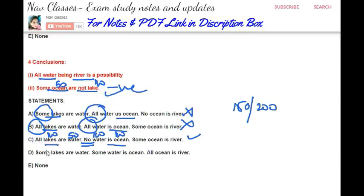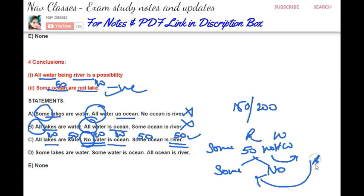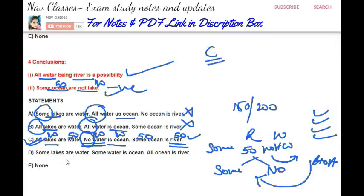For the possibility case — 'all water being river is a possibility.' We need the relationship between river and water, with ocean as common. Merging ocean-ocean: total 150, so we can merge. Water has 100 and river has 50 — one negative and one positive gives 'some not.' In 'some not,' going from river to water, two possibilities exist: 'some' and 'no.' Going from water to river, all types of possibilities exist. So 'all water being river' as possibility is correct — both conclusions follow from statement C, so that is the answer.